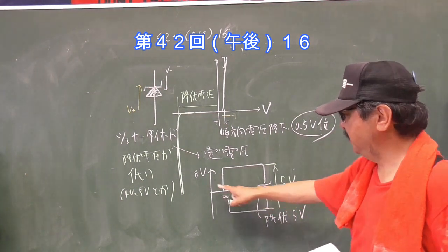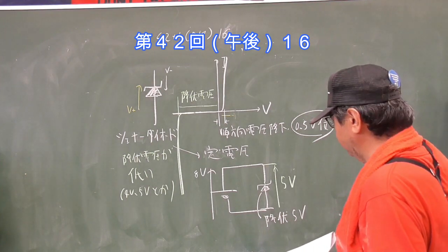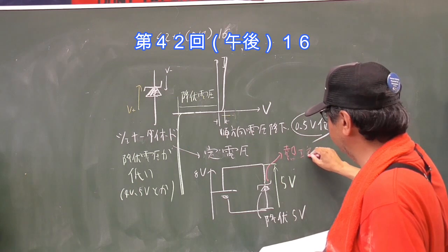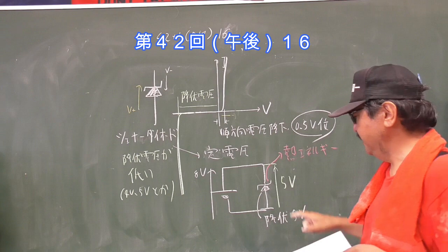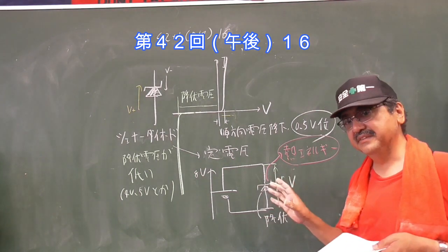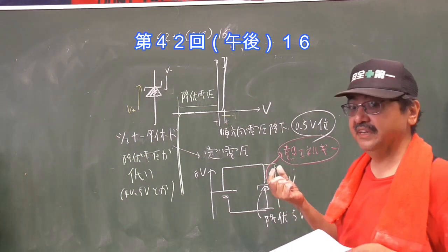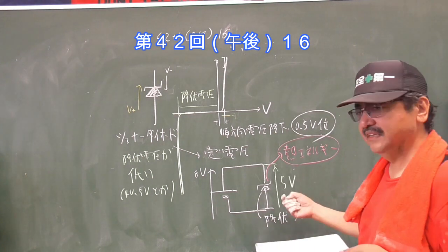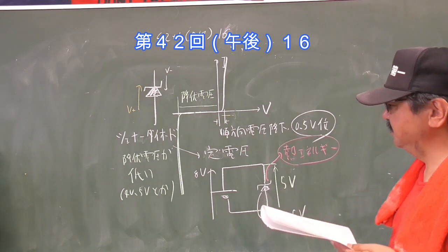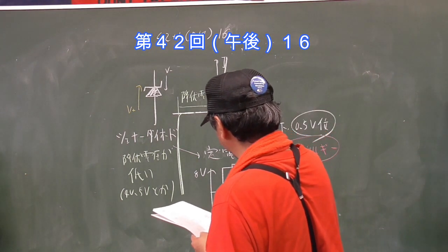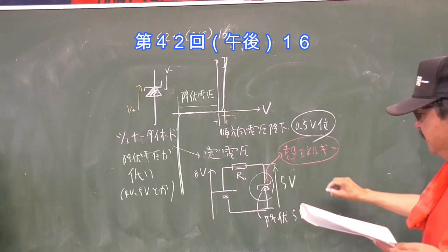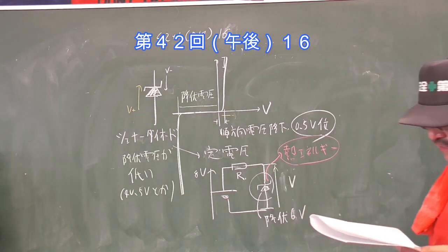ここの電圧が例えば8Vでこのゼナーダイオードの降伏電圧が5Vだとしたらここの電圧は5Vになっちゃうんですね。8Vかけててもゼナーダイオードよりもこちら側は5V。並列なのに8Vで5Vなのと思うんですけれどこれはね、大事なことです。全部熱になります。熱エネルギーでこの3V分をここで消費しちゃうんですね。こっちは5Vしか出ないと。ゼナーダイオードというのは結構盛大に熱を発生します。この原理を使った低電圧のレギュレーターという素子がありますが、あれはね盛大に熱を持ちます。